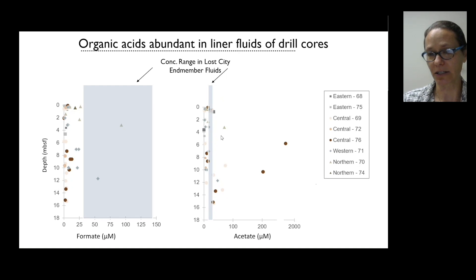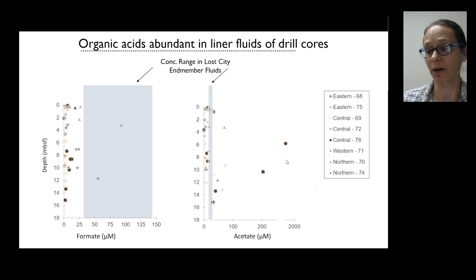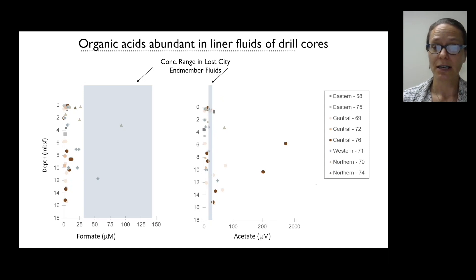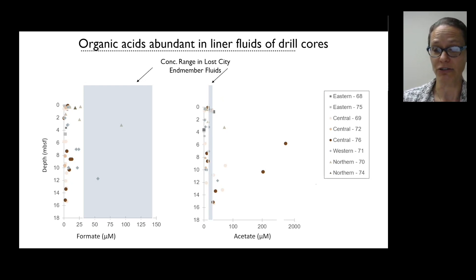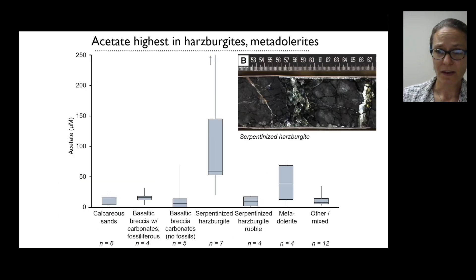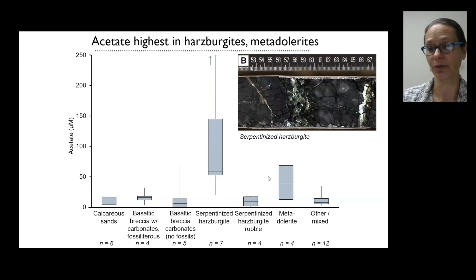What was very interesting is that we also get extremely elevated acetate concentrations. Acetate is the two-carbon organic acid, and we get concentrations up to about 2 millimolar. For scale, dissolved inorganic carbon in the ocean is about 1 millimolar — so we're getting concentrations twice as high as the total amount of carbon in deep sea water. Very, very high acetate concentrations.